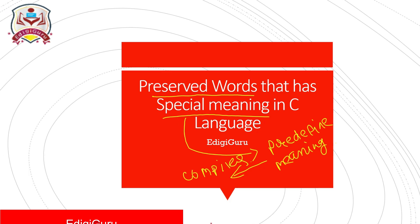Similarly, in C language, keywords are the reserved words that have a special meaning or predefined meaning. Keywords are nothing but reserved words, and their meaning is already known to the compiler. This predefined meaning is described in the compiler, so whenever we use those keywords in our C program, the compiler will recognize the keyword and its meaning is already known to it.